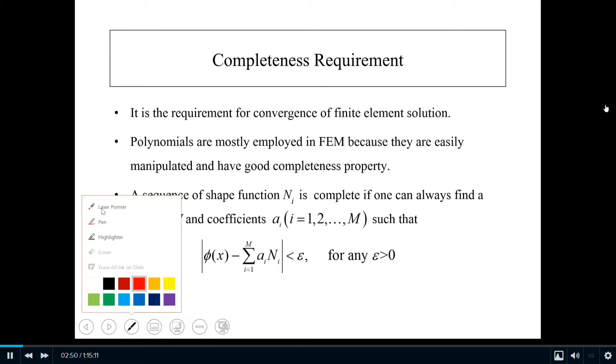A sequence of shape functions N_i is complete if one can always find a number M and coefficients a_i such that this equation is true for any epsilon greater than zero. If you look at this equation, this is like the exact solution phi, and this is the approximate solution. For a good approximate solution, this absolute value should be very small.